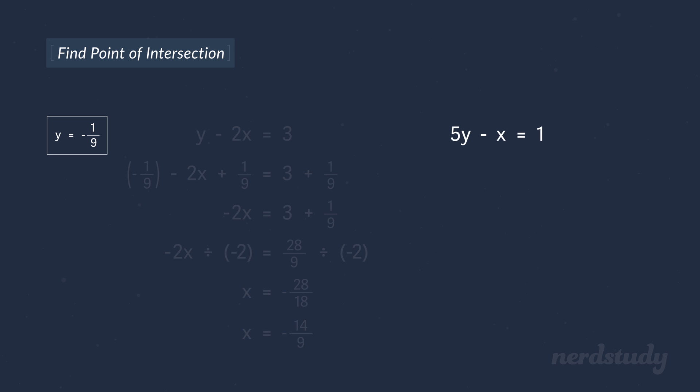Now let's plug negative 1 over 9 in for y in the other equation. We'd get negative 5 over 9 minus x equals 1. If we add negative 5 over 9 on both sides of the equation, we'd get negative x equals 1 plus 5 over 9. 1 plus 5 over 9 equals 14 over 9.